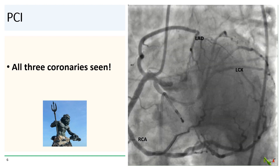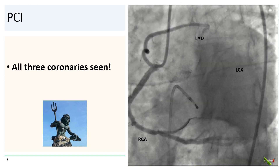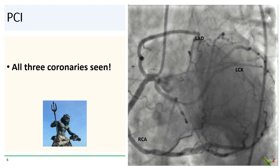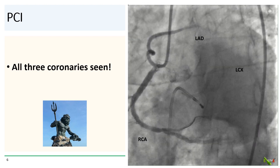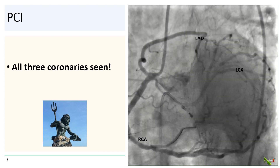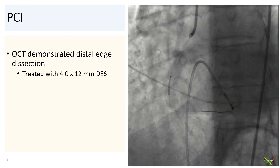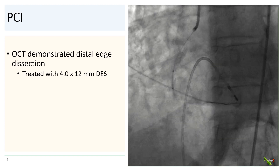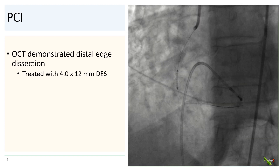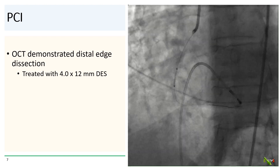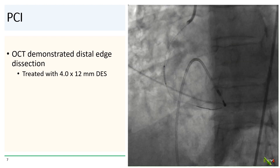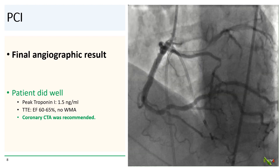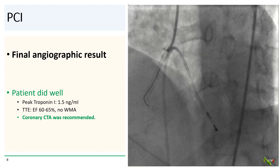Having all three coronary arteries originating from the right is an extremely rare coronary anomaly. We did OCT and identified an edge dissection at the distal edge of the stent, which we tacked up with an overlapping 4.0-by-12-millimeter DES.